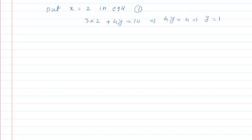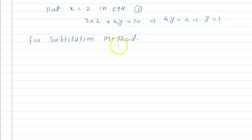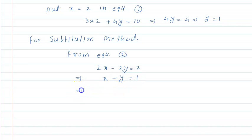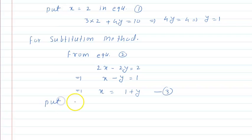Now let us use the substitution method. In the substitution method, from one equation we find the value of one variable and substitute it into the other equation. From equation number 2, which is 2x minus 2y is equal to 2, we take 2 as common and simplify to get x minus y is equal to 1. This gives us x is equal to 1 plus y — let us call this equation number 3.